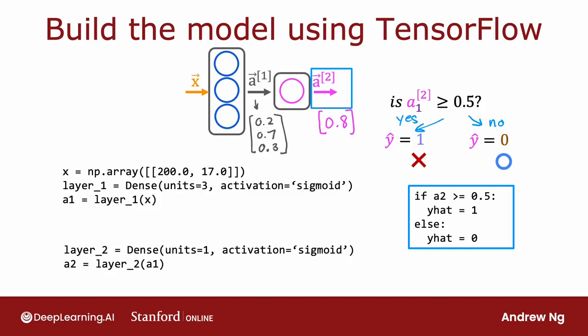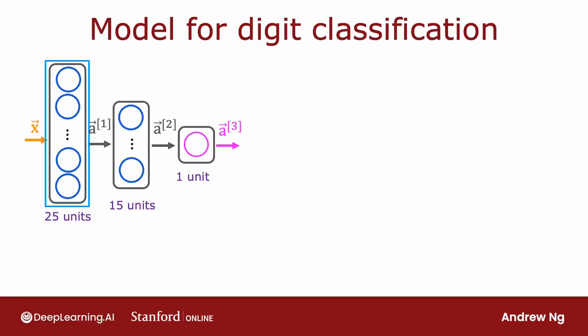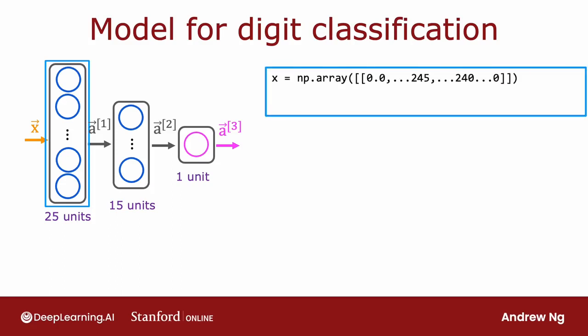Let's look at one more example. And we're going to go back to the handwritten digit classification problem. So in this example, x is a list of the pixel intensity values. So x is equal to a numpy array of this list of pixel intensity values. And then to initialize and carry out one step of forward propagation, layer one is a dense layer with 25 units and the sigmoid activation function. And you then compute a1 equals the layer one function applied to x.